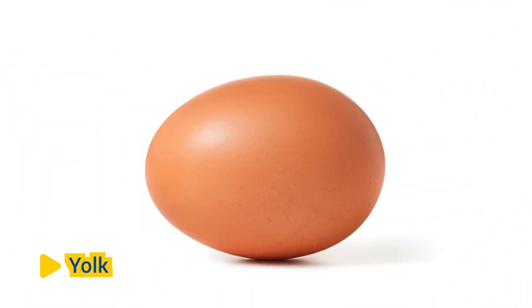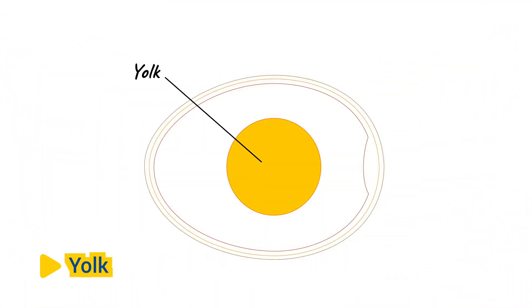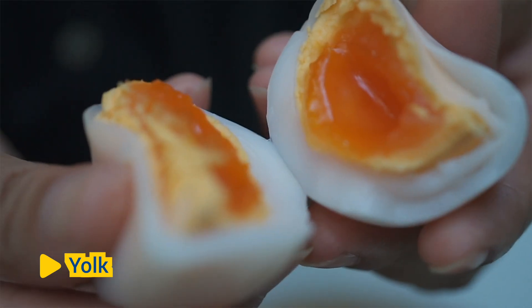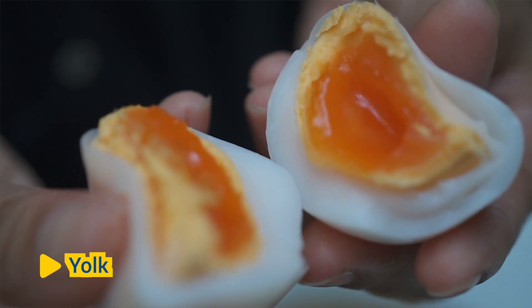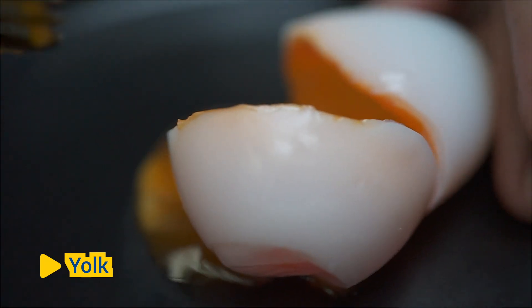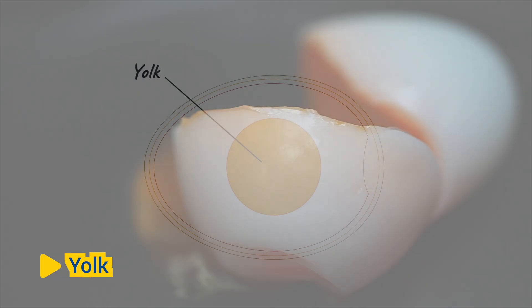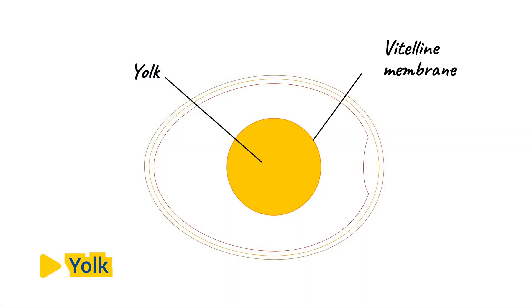Yolk. The yolk is the yellow or orange-colored spherical mass suspended within the egg white. It serves as the primary source of nutrients for the developing embryo, providing proteins, lipids, vitamins, and minerals necessary for growth and development. The yolk is surrounded by a vitelline membrane, which helps contain its contents and protect the embryo.